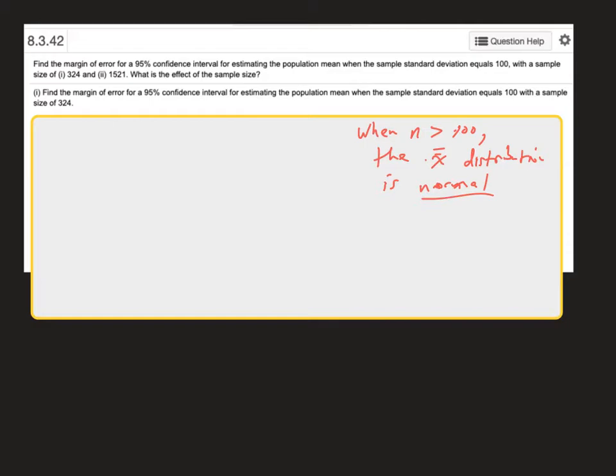So the important thing from that is that when we have a large n, then we resort to using, for confidence intervals, we resort to using the magic z numbers from before.